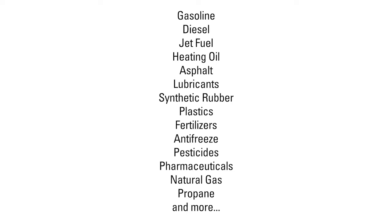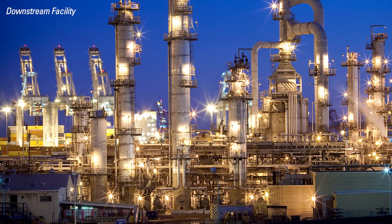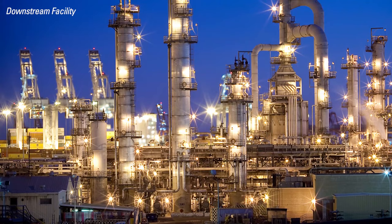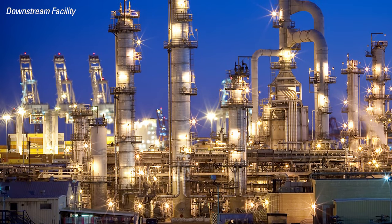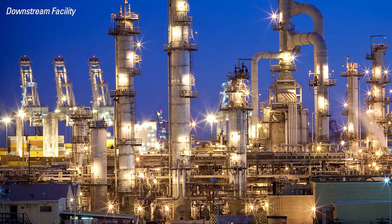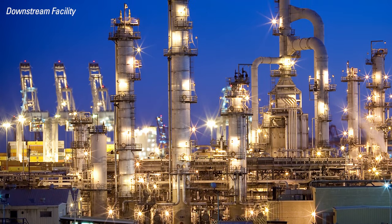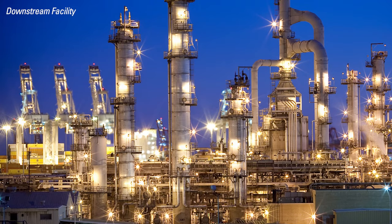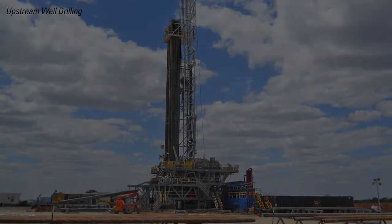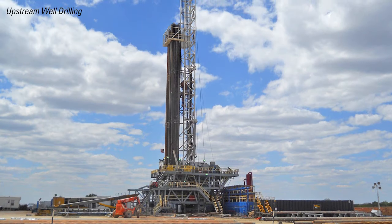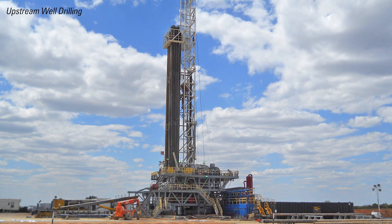Additional downstream products include synthetic rubber, plastics, fertilizers, antifreeze, pesticides, pharmaceuticals, natural gas, propane, and a lot more. The downstream sector is very different from the other two sectors. Process pressures and the desired final product will dictate what a downstream facility looks like.